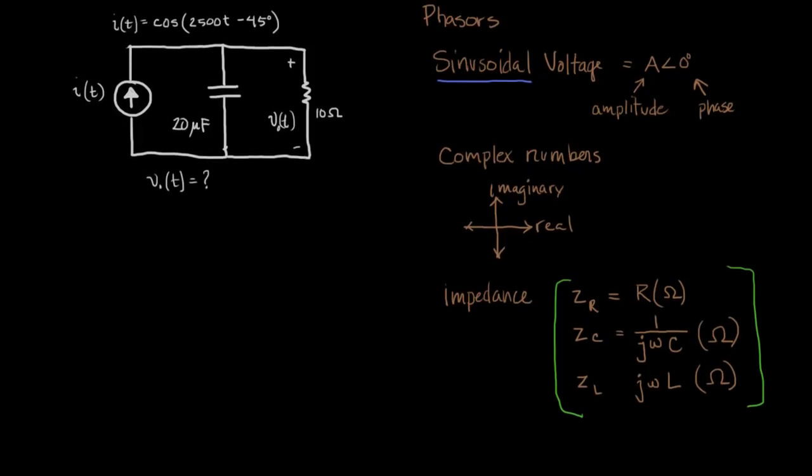You're going to want to have these values memorized. These are the impedance values. Notice that they are all ohmic in their units, and that's going to enable us to treat this as if it were a simple resistive circuit. So we'll be able to combine resistors and use source transformation, nodal analysis, mesh, all of those different methods to solve our problem.